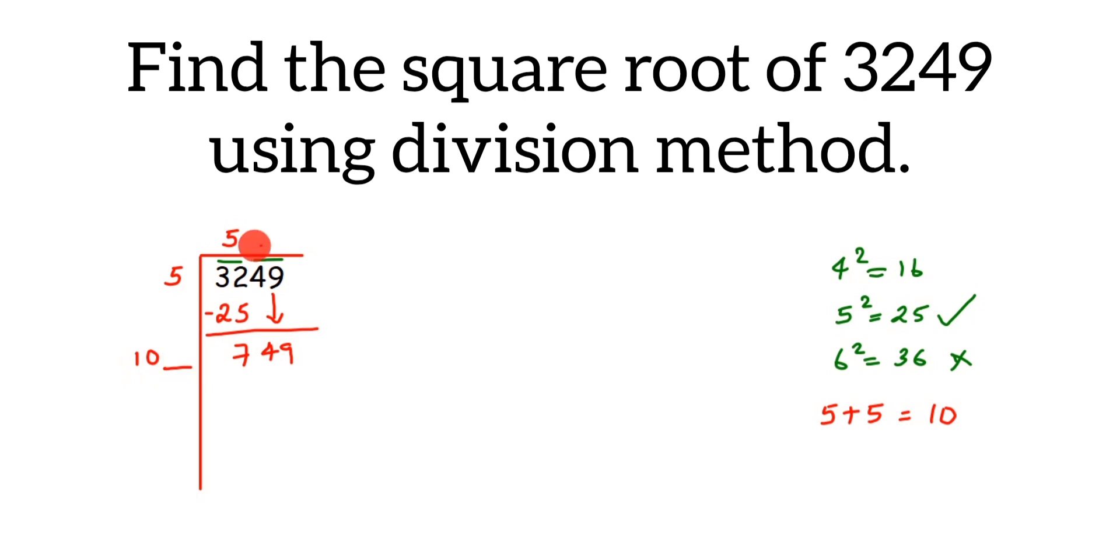Now think of a number. We have 9 here. We want a number which equals 749 or less than that, and we have 9 at the end. The last digit is 9, and we want some number such that when you multiply it with itself, you get 9. Which number will give us 9? We know that 3² is 9 and 7² is 49, so for both these numbers we have 9 at the end.